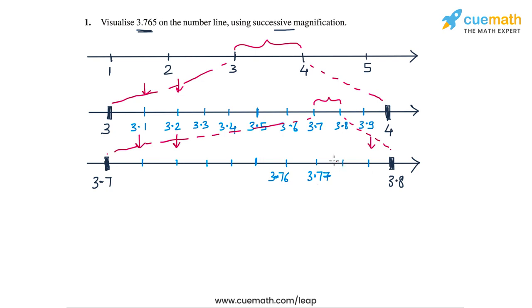Now because 3.765 lies between 3.76 and 3.77, let's focus on the interval from 3.76 to 3.77. Let's magnify this interval again.